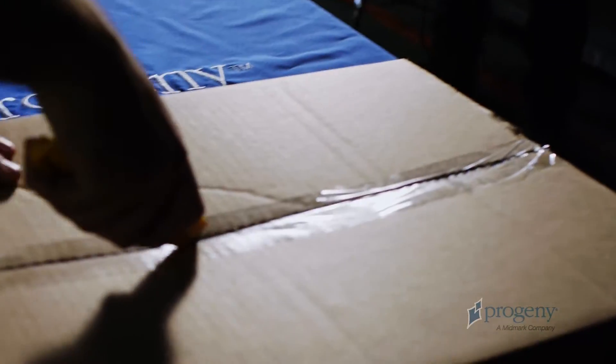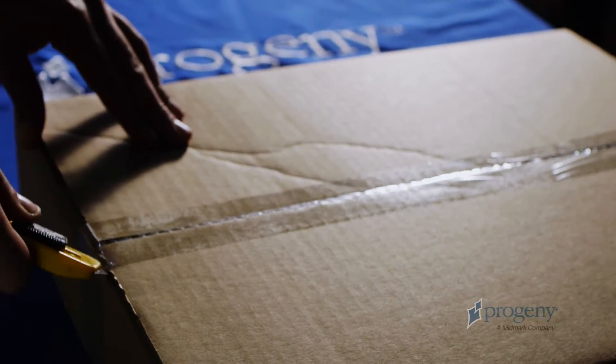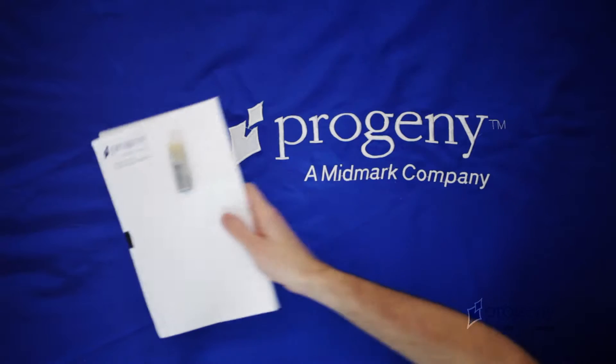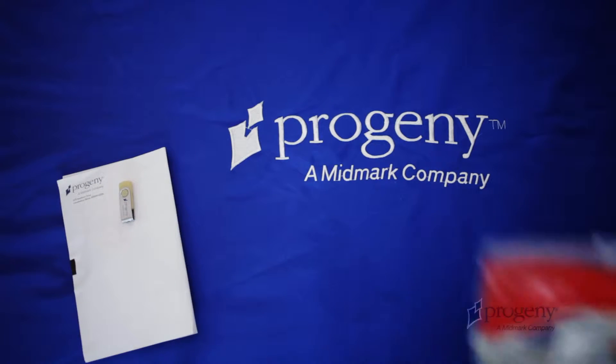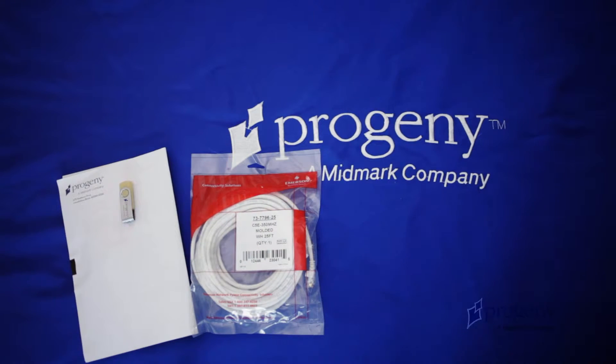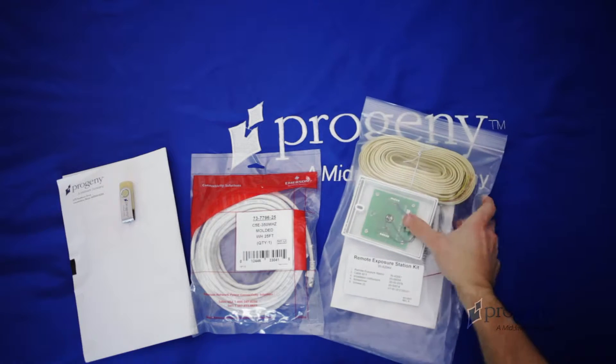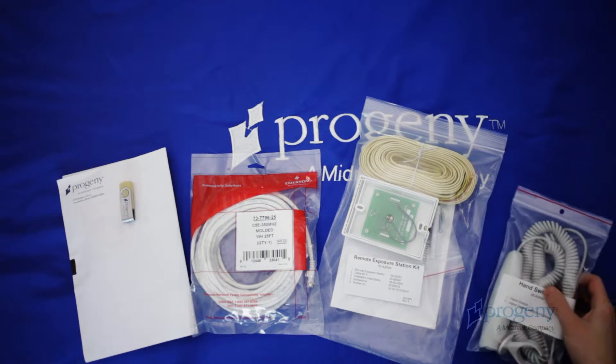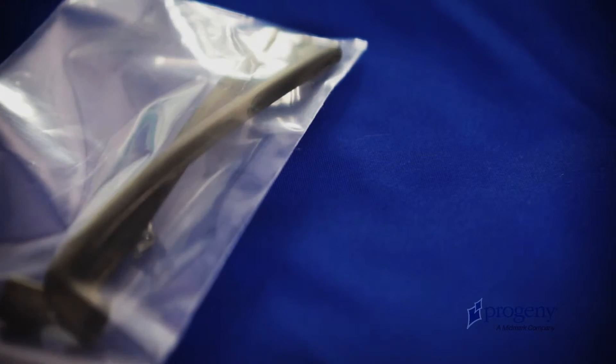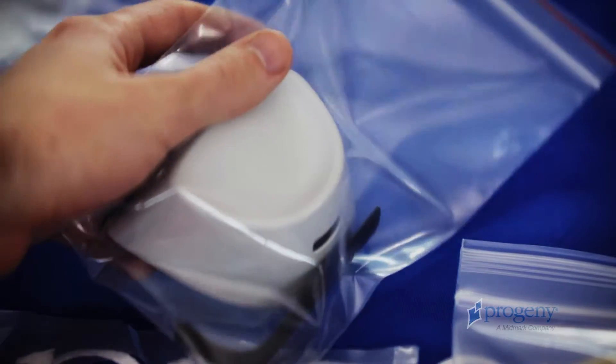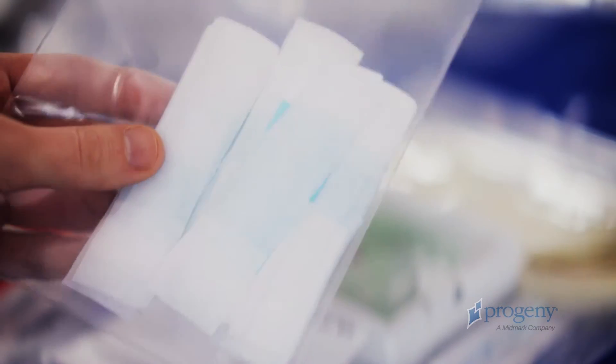Open the accessory box removed from the shipping crate. Remove the software guide and USB drive, the CAT5 Ethernet cable, the wall mount push button, the remote exposure button, the head support wands, the TMJ positioner, the panoramic bite piece and positioner, and the sanitary barriers.